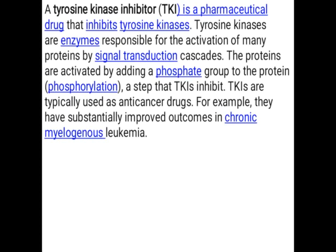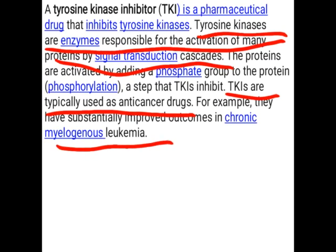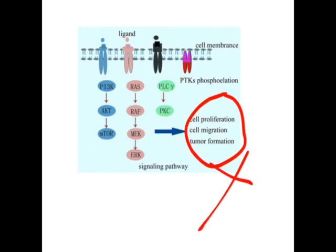So there is no protein biosynthesis and no growth of the tumor cell. Tyrosine kinase is the enzyme responsible for the activation of many proteins by signal transduction. These inhibitors are typically used as anti-cancer agents for chronic myelogenous leukemia. When a ligand comes near the cell membrane transduction mechanism, phosphorylation takes place, leading to cell proliferation, cell migration, and tumor formation. If the enzyme is inhibited, there is no phosphorylation, so cell proliferation, migration, and tumor formation decrease.